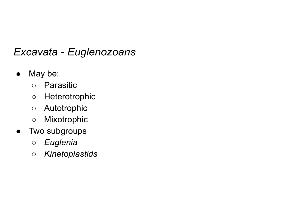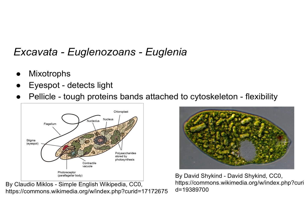The two subgroups of euglenozoans we'll focus on are the euglenoids and kinetoplastids. The euglenoids are mixotrophs that can switch between different metabolic strategies. They have an eye spot that helps detect light, and a pellicle — tough protein bands attached to the cytoskeleton that give the cell flexibility. They have photoreceptor cells allowing them to swim toward or away from light depending on the source.